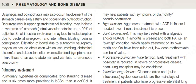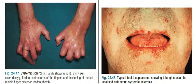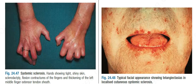Recurrent occult upper GI bleeding may indicate a watermelon stomach (antral vascular ectasia) in up to 20% of patients. Small intestine involvement may lead to malabsorption due to bacterial overgrowth and intermittent bloating, pain, or constipation. Dilatation of bowel due to autonomic neuropathy may cause pseudo-obstruction with nausea, vomiting, abdominal discomfort, and distension, often worse after food. Symptoms can mimic those of an acute abdomen and can lead to erroneous laparotomy.